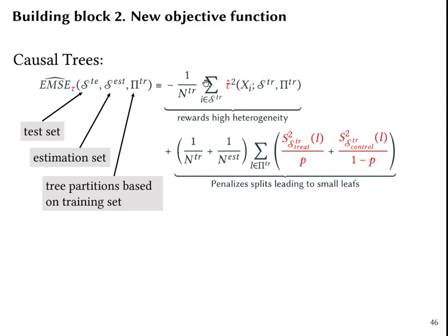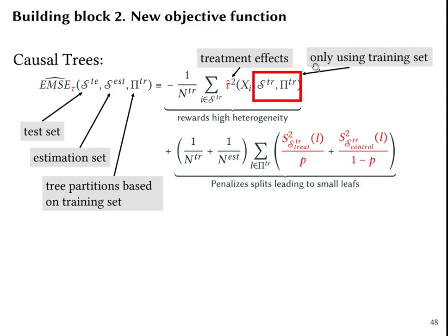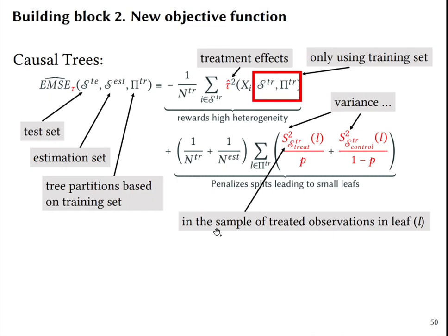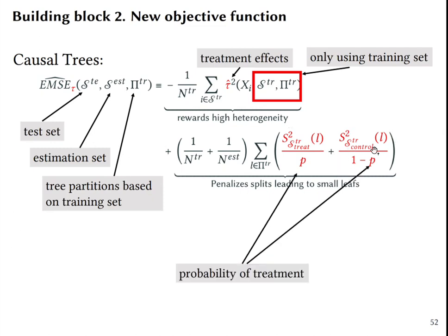In the first part of the formula, instead of maximizing the sum of squared means, you want to maximize the sum of squared treatment effects, but only relying on training set. The second part of the formula includes variance in the sample of treated observations in leaf L and in the sample of control observations in leaf L. And finally, it also includes probability of treatment. If it's an RCT, it's known. If it is not an RCT, it needs to be calculated as well for each node L.